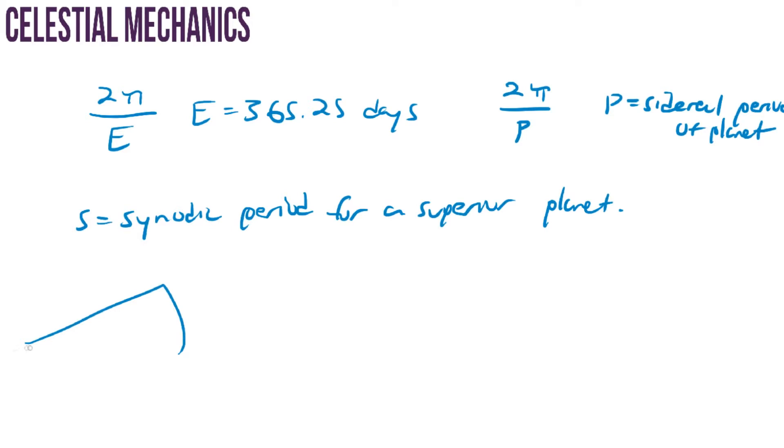We can now say that the superior planet traveling from B to C along this route makes some angle X. We can now say that for the Earth, to travel from these points will make some angle Y, but the time will be different. For the superior planet, the superior planet will travel this angle in S times two pi over P.